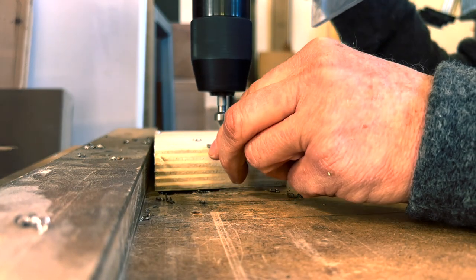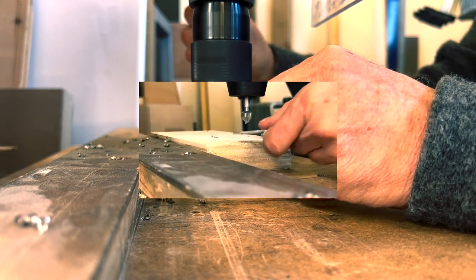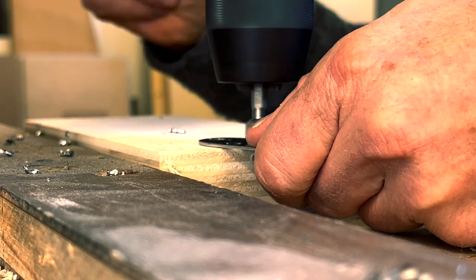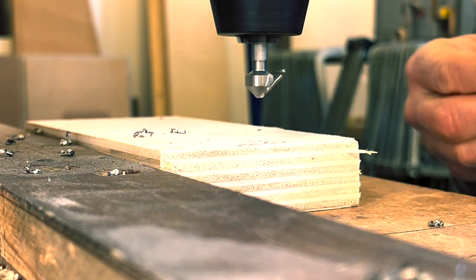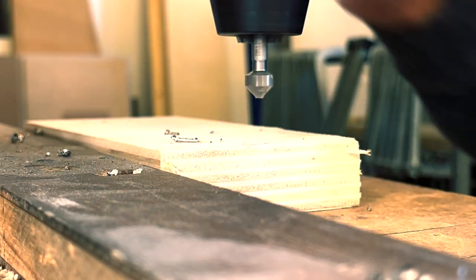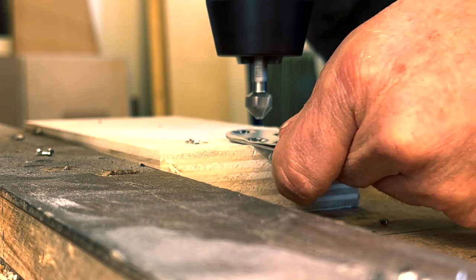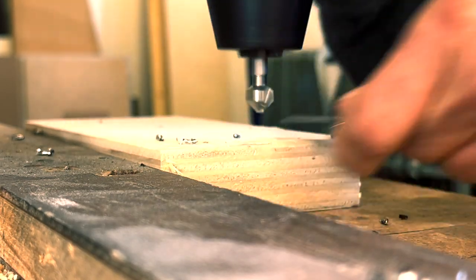Another thing I need to do is to make bigger the countersink of the hinges because I need that the screw sits very well in the hole. You need a flat installation.